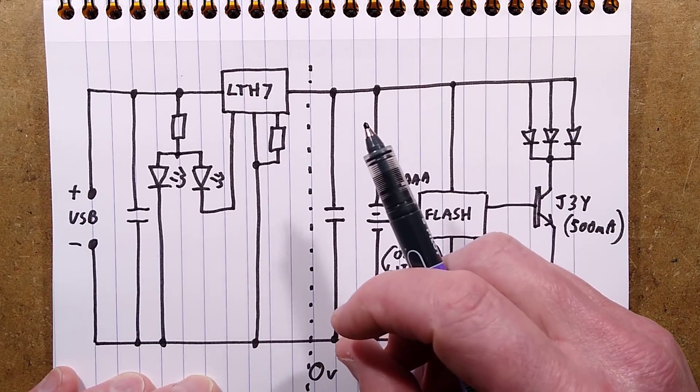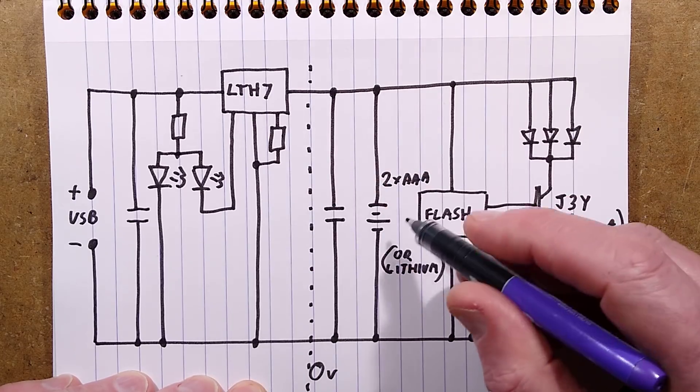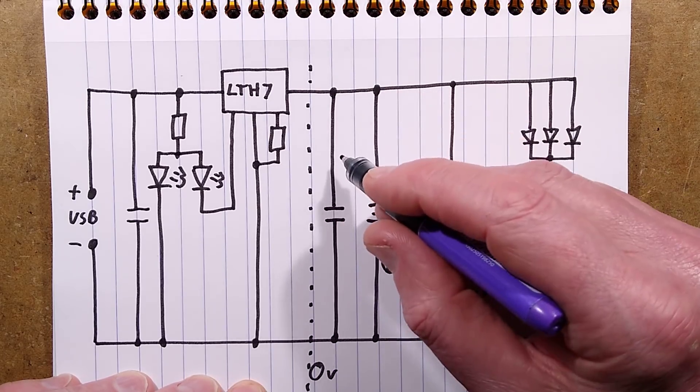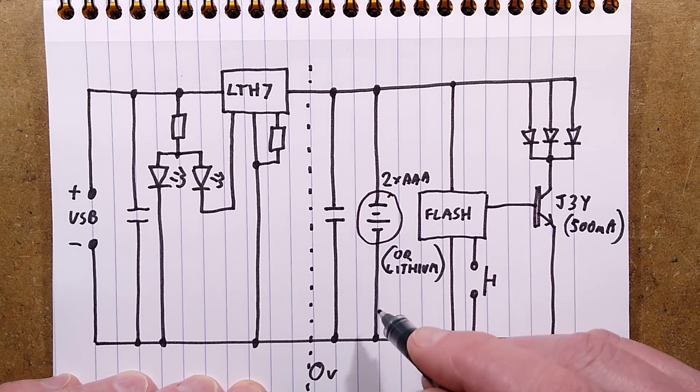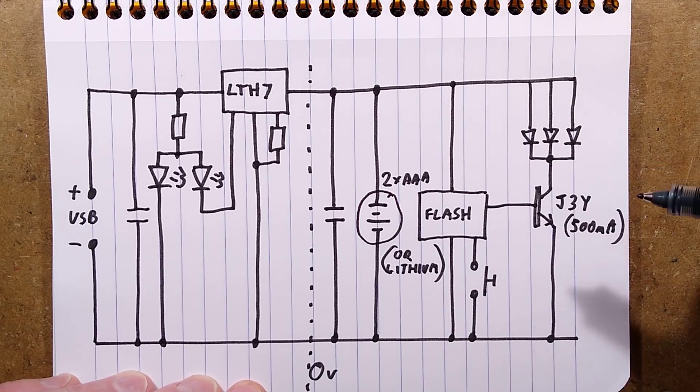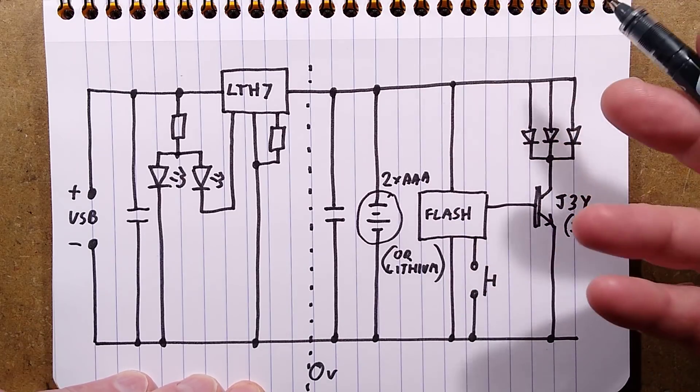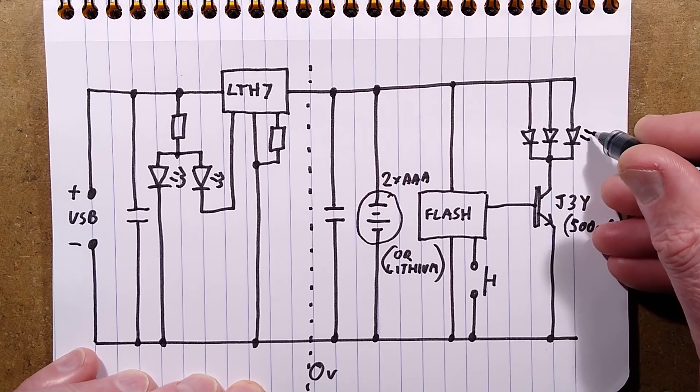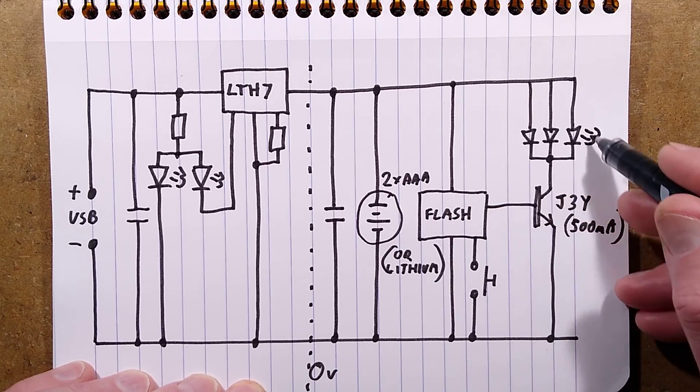There is a resistor for programming the current, and then it would normally go over to the rechargeable cells, but in this case, they've got two AAAs instead of the lithium. I think it'd be better to have a protected lithium, but having said that, that would just protect it if the voltage went down so low that it went below, say about three volts. But at that point in time, with the resistor, the intensity of these are going to get quite low.